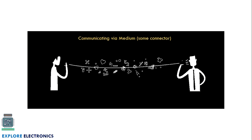In childhood, you can recall we used a thread and a matchbox to communicate over a far distance. The thread is the communication medium between the two people, passing the information from one person's audio to the other. So the communication medium is very important to carry the information from one end to the other.